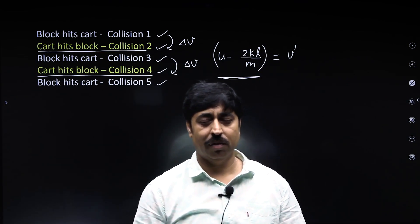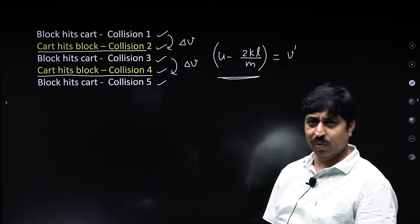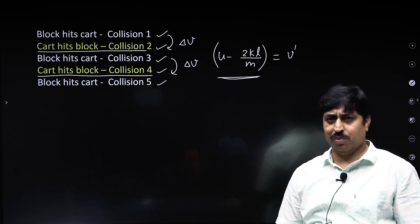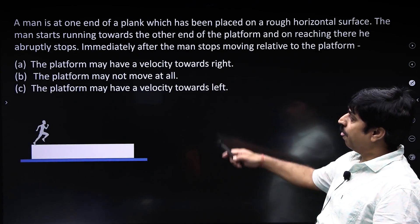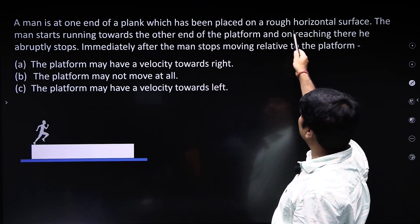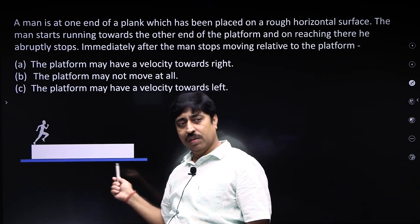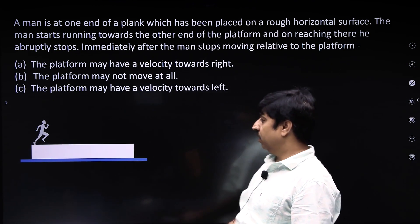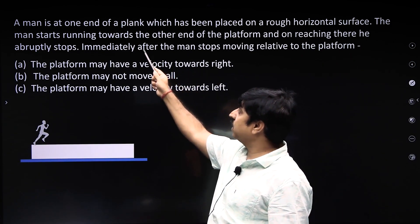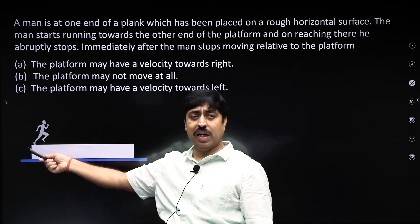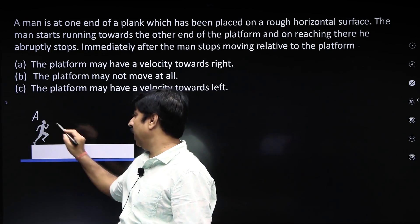This is the solution of this question. I hope all of you enjoyed this. As promised, I leave you with a simple objective question to try. A man is at one end of a plank which has been placed on a rough horizontal surface. There is friction between the plank and the horizontal surface. The man starts running towards the other end of the platform — let us say this end is A and this end is B.